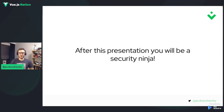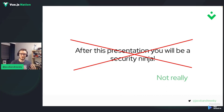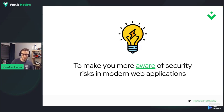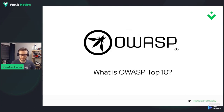After this presentation, you might hope to be a security ninja, but unfortunately with only 15 minutes, the topic is so huge that it's not possible to share all the knowledge. So what I decided to do instead is to make you more aware of security risks in modern web applications — focusing on what you as a developer should be looking at to make your applications more secure. I'll start with a concept I always use to explain web security: OWASP Top 10.